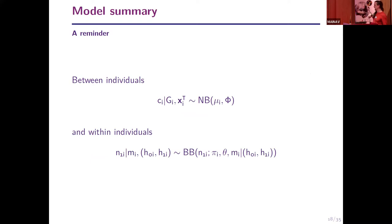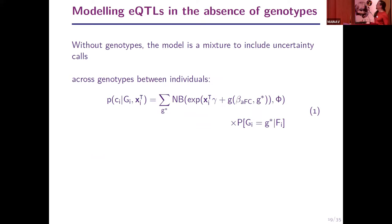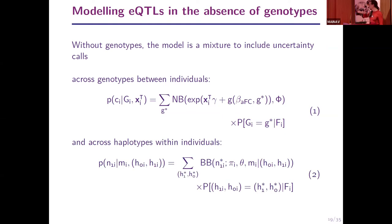In the absence of high-quality genotyping data, we can also model using genotypes and haplotypes identified from RNA-seq data, incorporating uncertainty on the calls. We use a mixture of negative binomials across the different possible genotypes, and similarly a mixture across possible beta binomials for the within-individual component, to infer the allelic fold change in the presence of uncertainty around the genotype and haplotype calls.